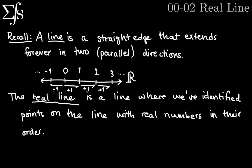So this is essentially what the real number line is. This picture describes how we think about the real number line. It's this geometric line where we've identified points on the line with real numbers.